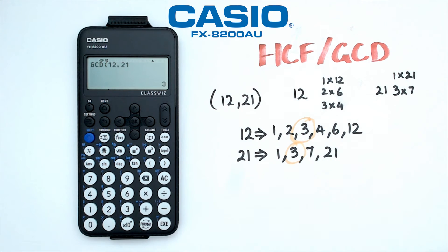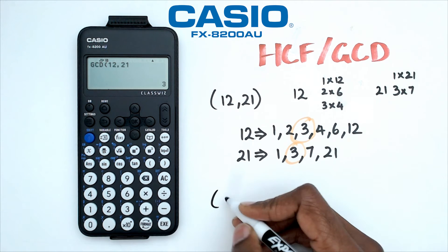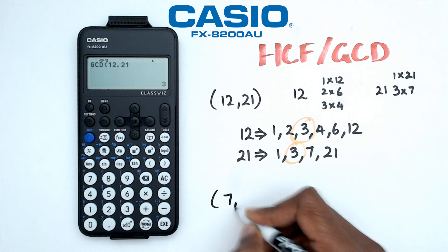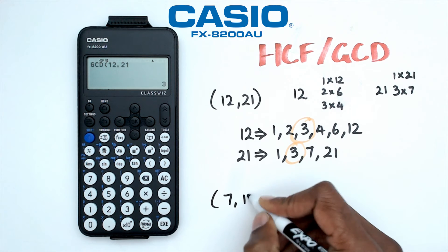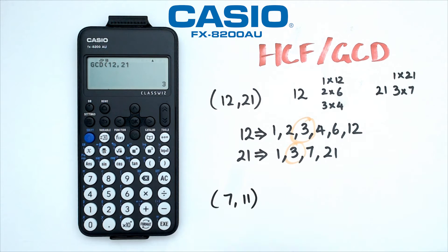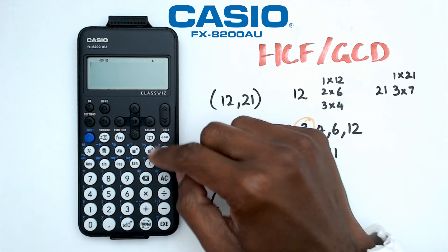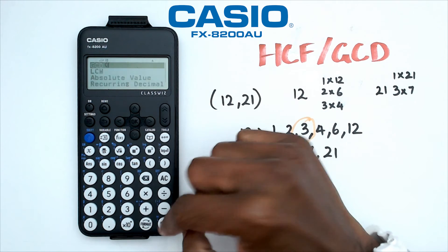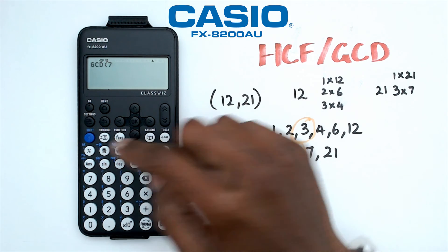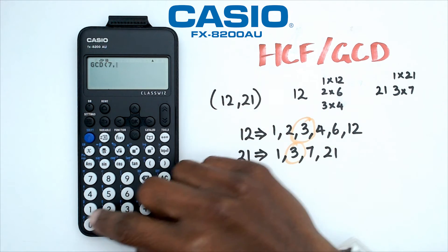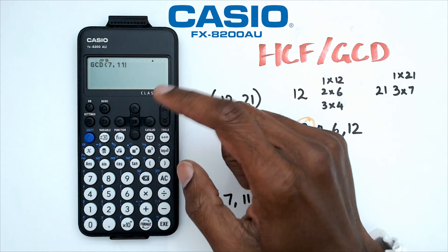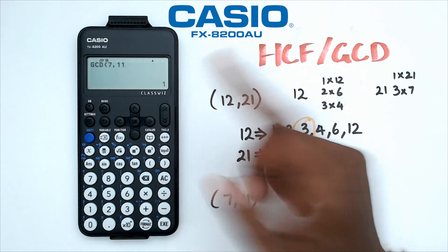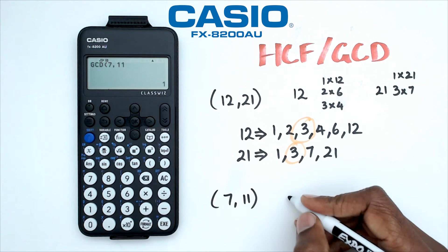Let's have a look at another example. So if I want to find the greatest common divisor between 7 and 11. Now if I was to figure out between 7 and 11, so catalog, numeric calculation, GCD, 7. And I know that 7 and 11 are prime numbers. So therefore the highest common factor is going to be 1. So as you can see, that is 1.